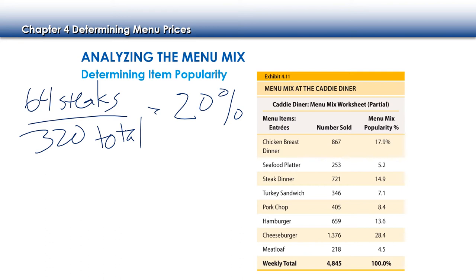Looking at the chart up on the board, our total number served was 4,845 total entrees. We can look at how popular something was based on the percentage. For example, our most popular item is the cheeseburger, right there at 28.4 percent.